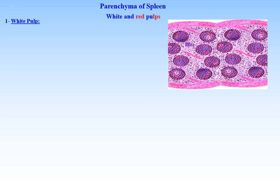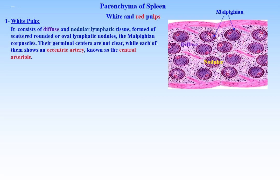Parenchyma of the spleen is composed of white and red pulps. White pulp consists of diffuse and nodular lymphatic tissue, formed of scattered, rounded, or oval lymphatic nodules called the malpighian corpuscles. The germinal centers of the nodules are not clear, while each of them shows an eccentric artery known as the central arteriole.